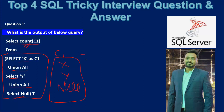If we are going to do the COUNT of these three values, ideally it should return 3. But it will not return 3. Why? Because whenever you use an aggregate function and a null value appears, that null value will be ignored. So the output will be 2.